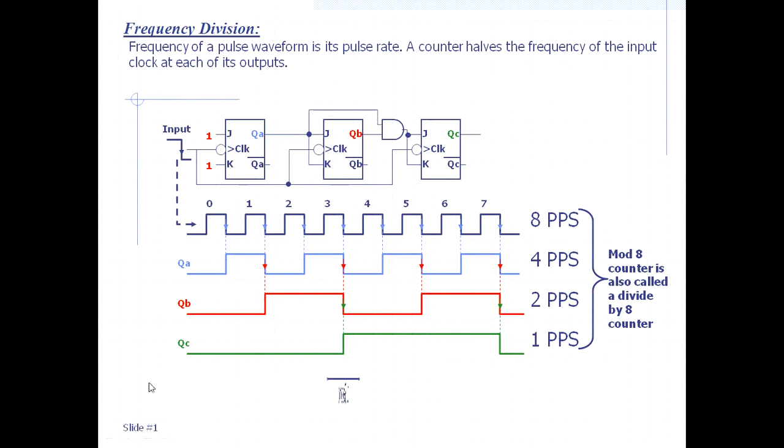So if you consider it as a one-second pulse, then if 8 PPS - means pulse per second - is coming, it will become 1 PPS as it surpasses the counter. This is the frequency division. Thank you so much.